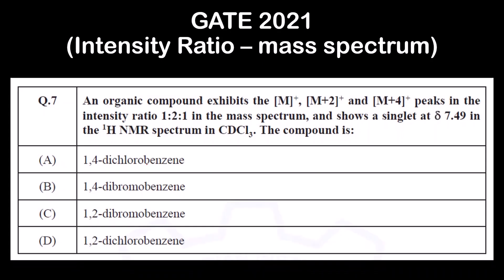It is based on intensity ratio of the mass spectrum. The question is: an organic compound exhibits [M]+, [M+2]+ and [M+4]+ ion peaks in the ratio of 1:2:1 in the mass spectrum and shows a singlet at δ 7.49 in the 1H NMR spectrum in CDCl3. The compound is - and all these four options are given.